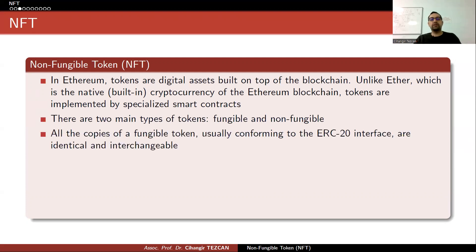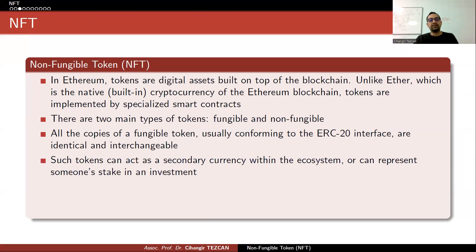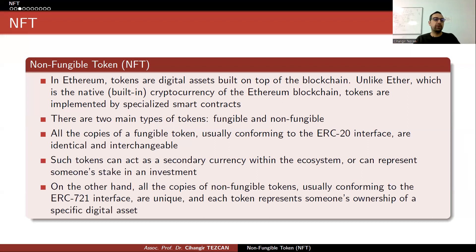All copies of fungible tokens, usually conforming to the ERC-20 interface, are identical and interchangeable. Such tokens can act as a secondary currency within the ecosystem or can represent someone's stake in an investment. On the other hand, all copies of non-fungible tokens, usually conforming to the ERC-721 interface, are unique, and each token represents someone's ownership of a specific digital asset.